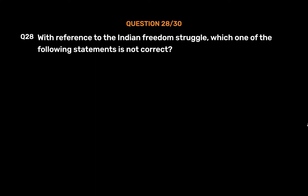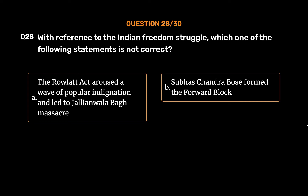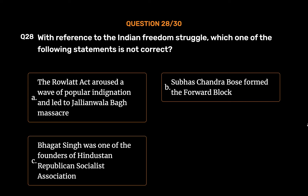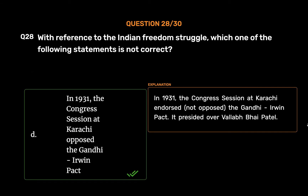Question No. 28. With reference to the Indian Freedom Struggle, which one of the following statements is not correct? Option A: The Rowlatt Act aroused a wave of popular indignation and led to the Jallianwala Bagh Massacre. Option B: Subhash Chandra Bose formed the Forward Bloc. Option C: Bhagat Singh was one of the founders of the Hindustan Republican Socialist Association. Option D: In 1931, the Congress session at Karachi opposed the Gandhi-Irwin Pact. The correct answer is Option D. In 1931, the Congress session at Karachi endorsed, not opposed, the Gandhi-Irwin Pact. It was presided over by Vallabh Bhai Patel.